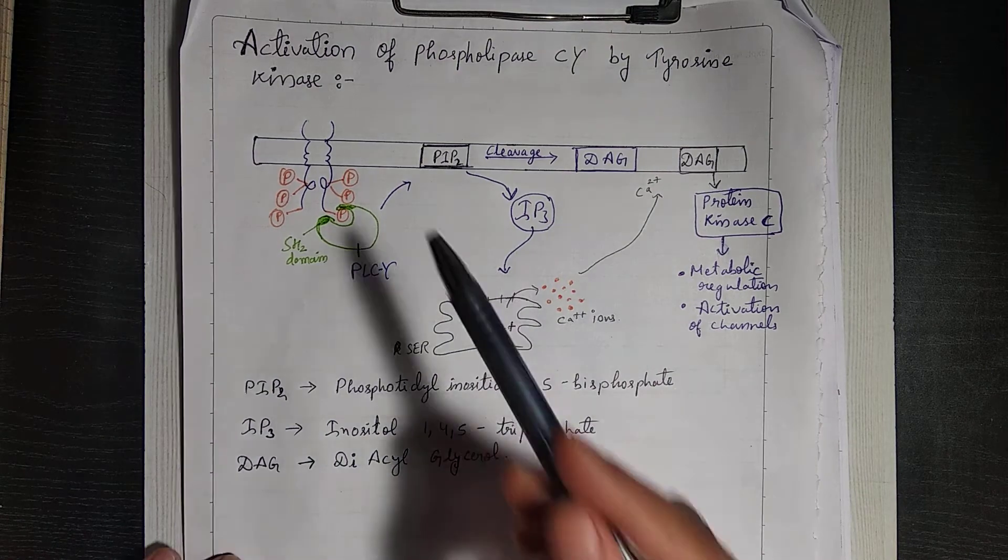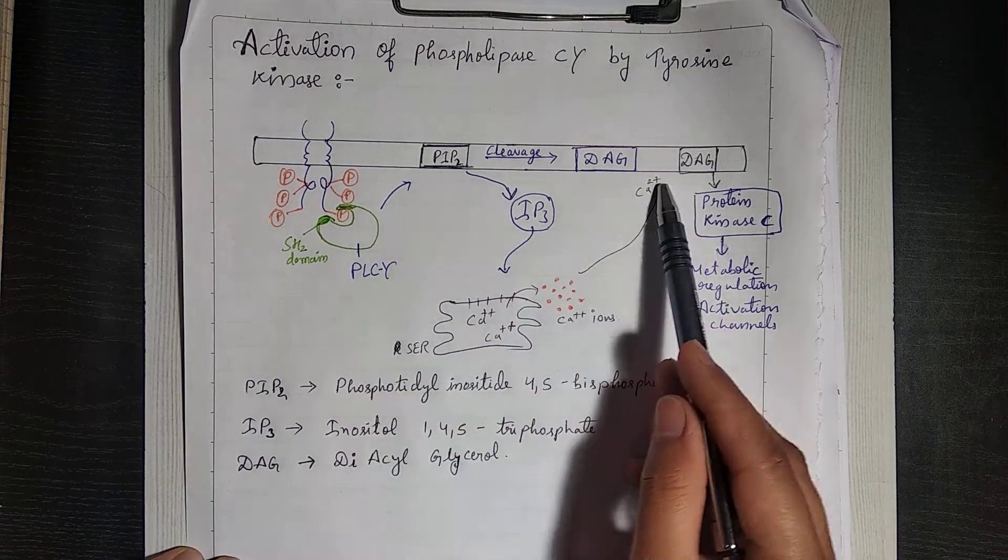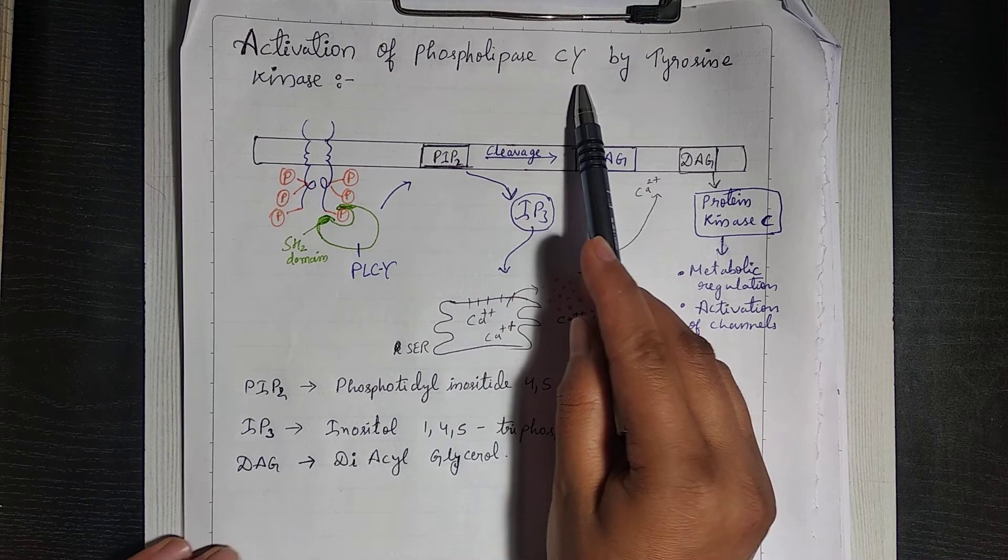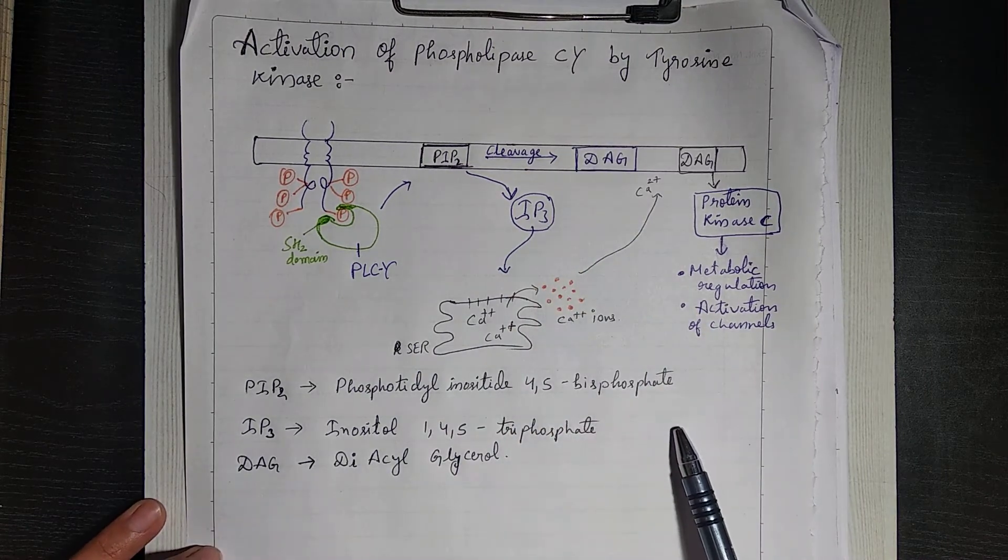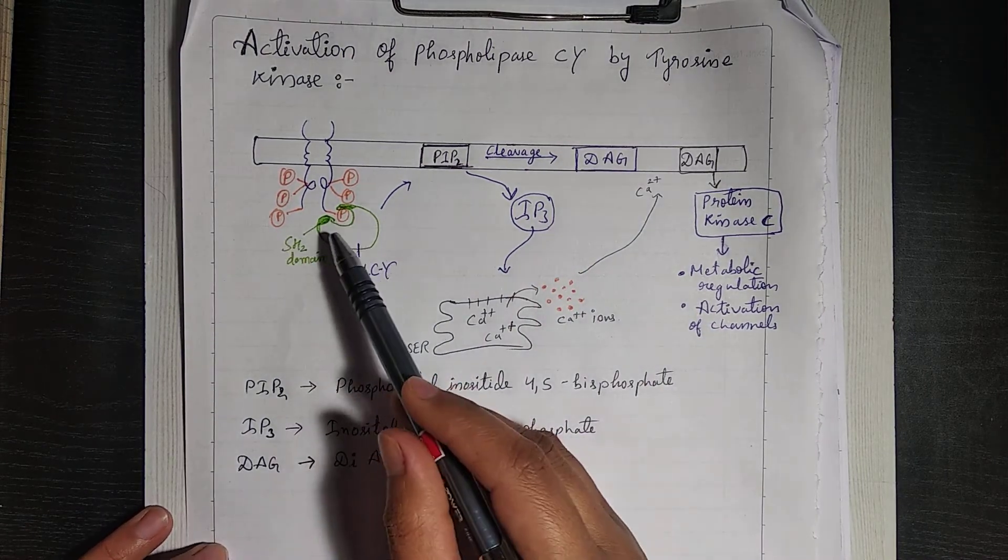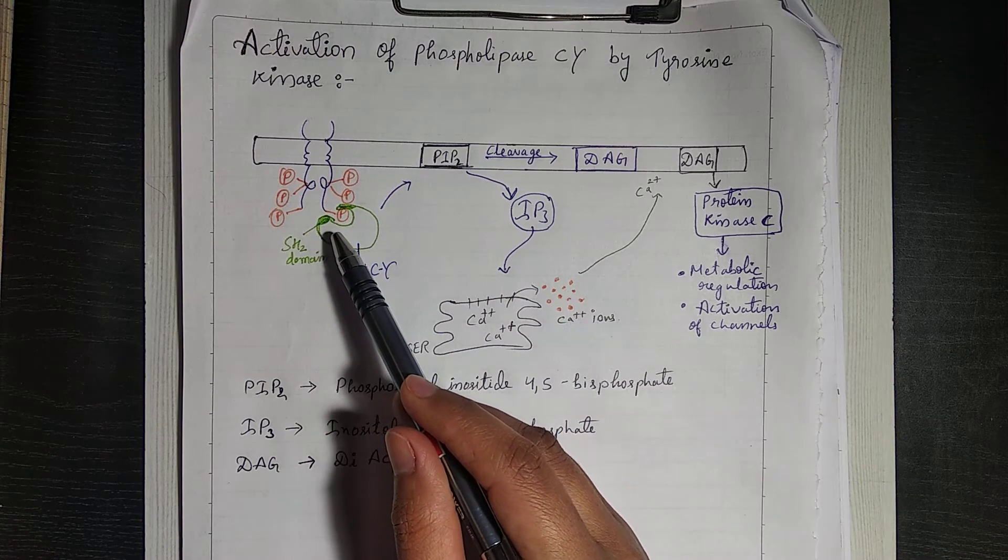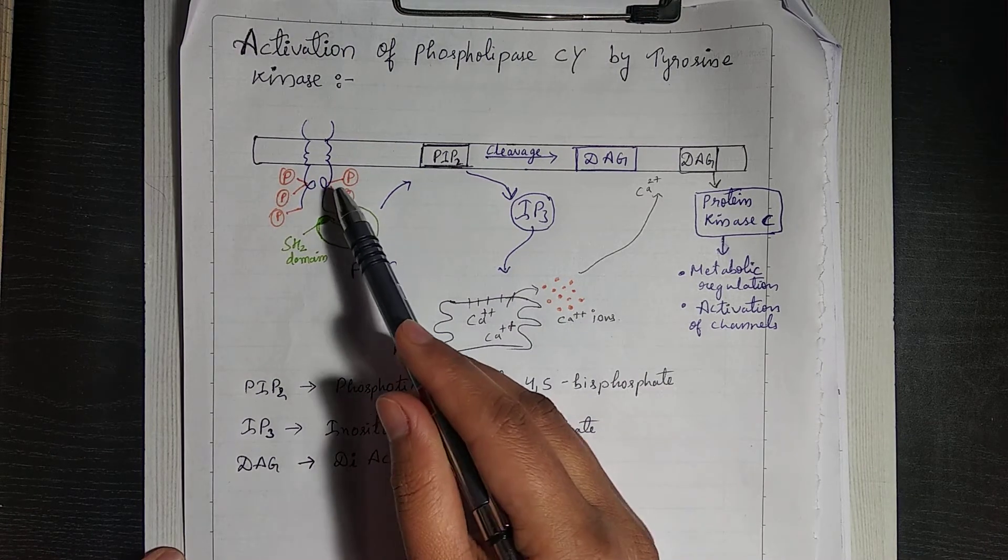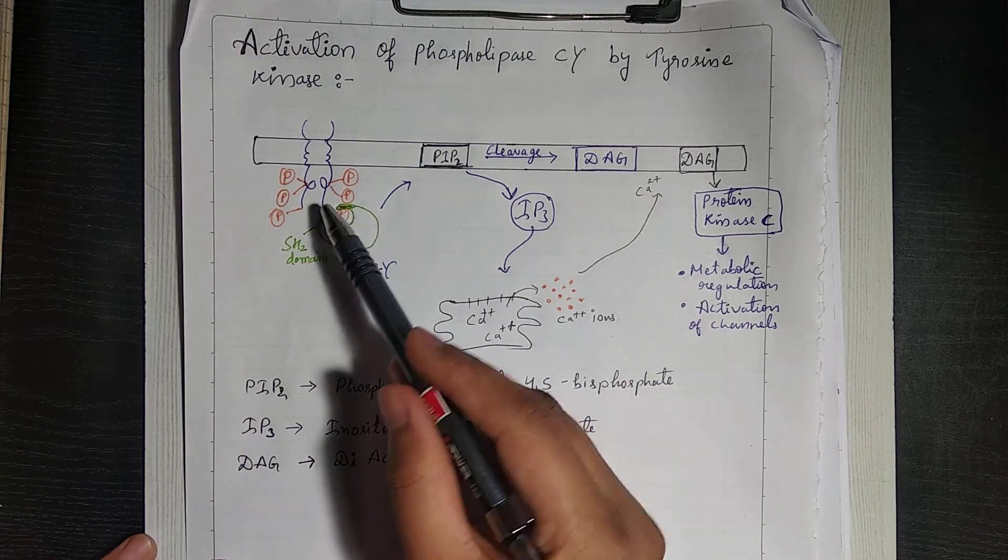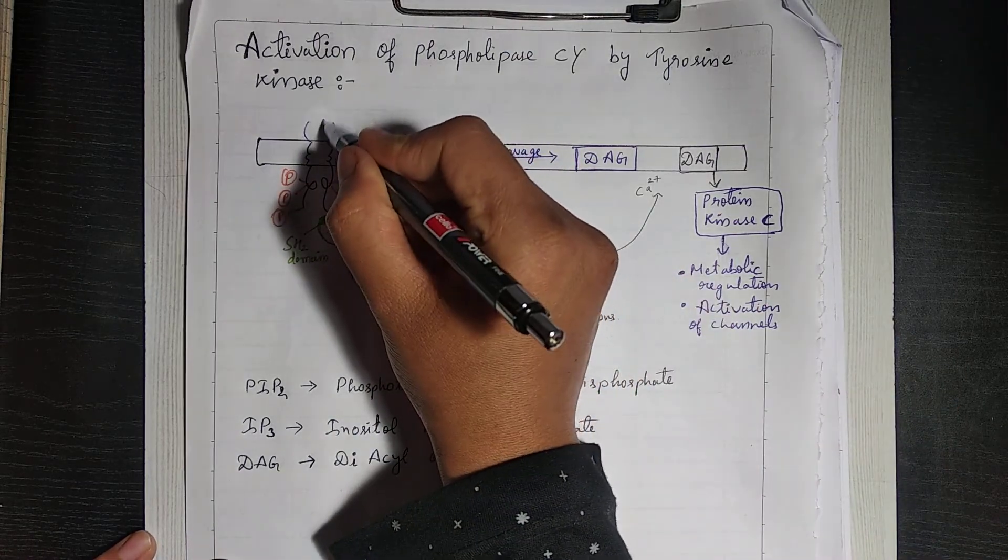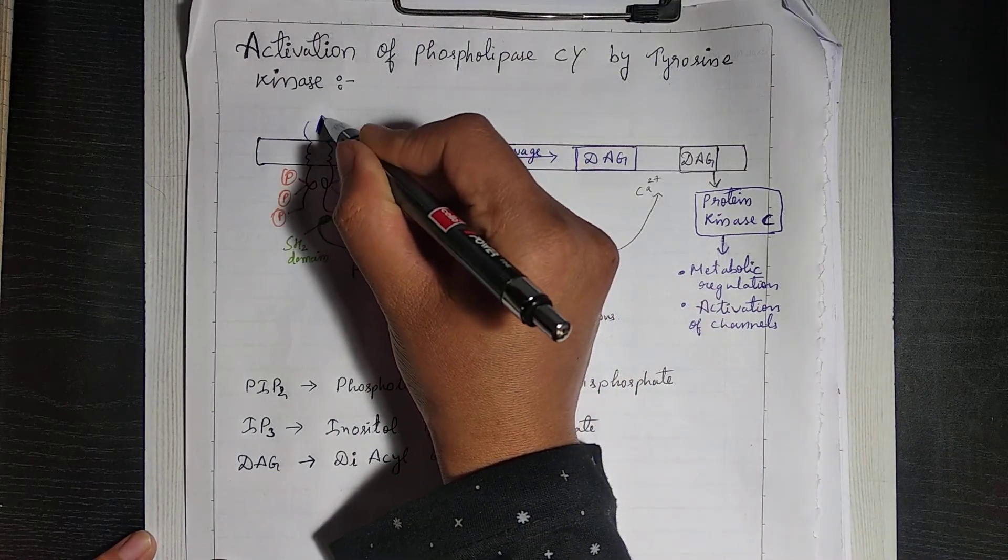Now in receptor tyrosine kinase signaling, its name is Phospholipase C gamma. So let's discuss it in detail again. It will be kind of revision for those who have watched that GPCR signaling lecture. Let's see what happens.